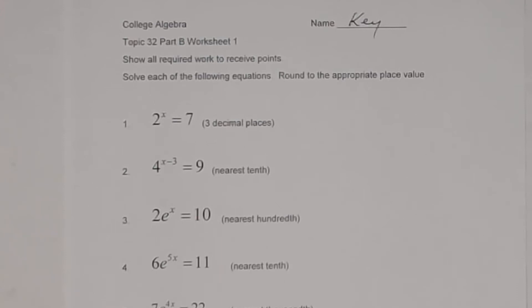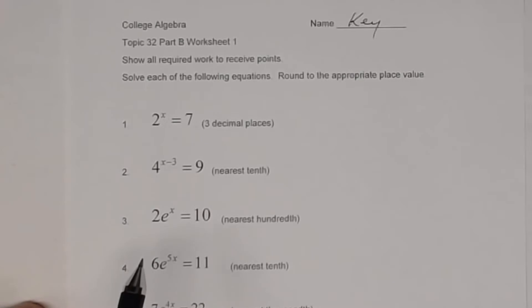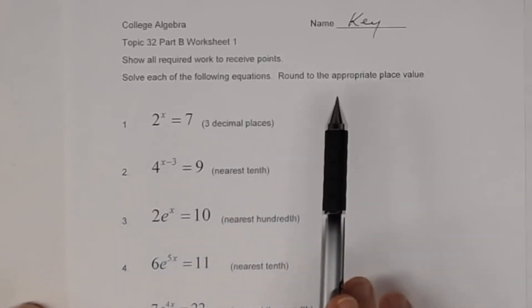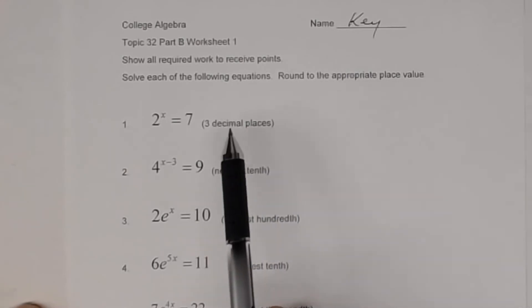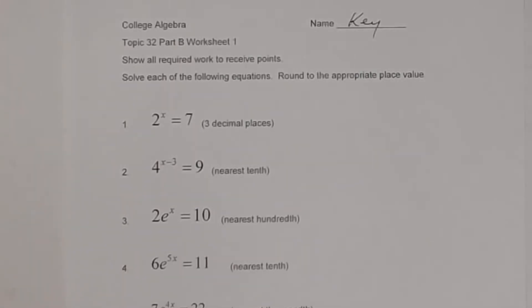This is a key to Topic 32, Part D, Worksheet 1. On this worksheet you're given some exponential equations and you're asked to solve them to a certain place value — three decimal places, nearest tenth, nearest hundredth, and so on. Before we look at the first problem, let's remind ourselves about the inverse properties of exponents and logarithms.